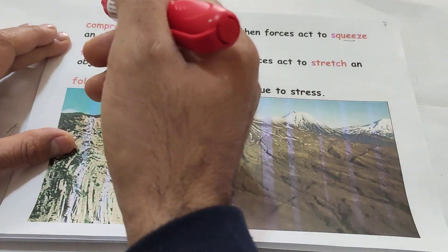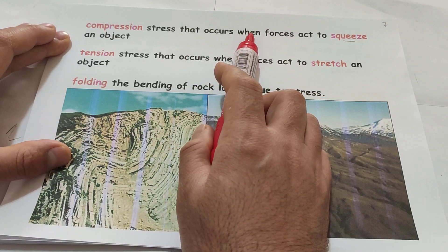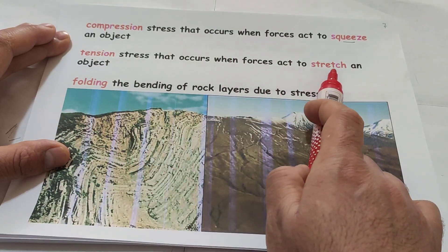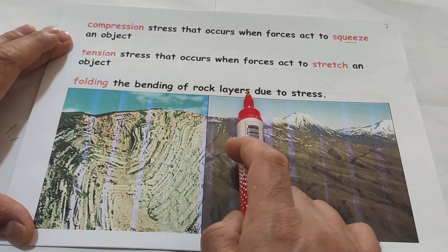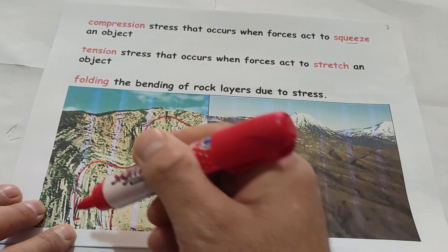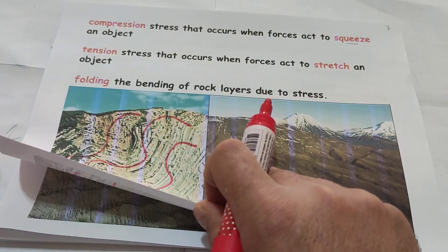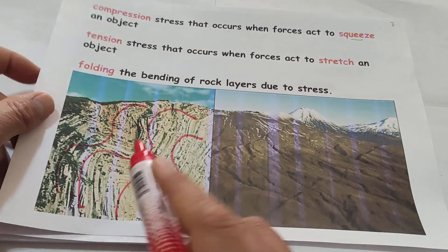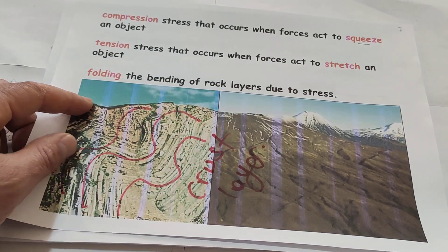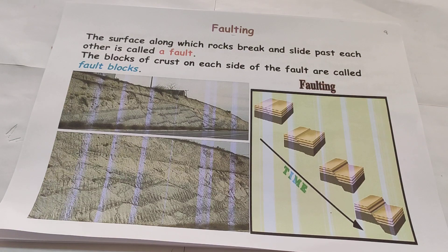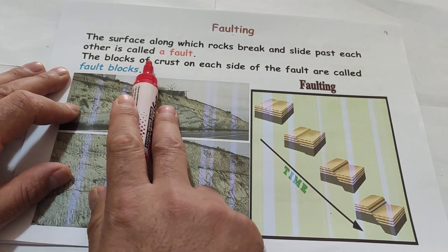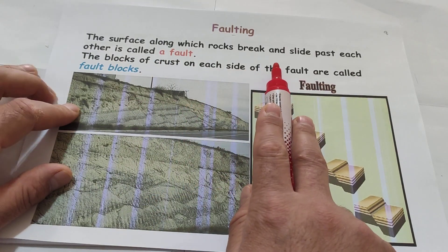Let us check some definitions. What is the meaning of compression? Compression: stress that occurs when forces act to squeeze an object. Tension: stress that occurs when forces act to stretch an object. Folding: the bending of rock layers due to stress. As you see here, can you see? The rock layer is bending — we call that process folding. Folding of course happens in the crust layer — crust, mantle, and core. The surface along which rock breaks and slides past each other is called a fault, and on each side of a fault are called fault blocks.